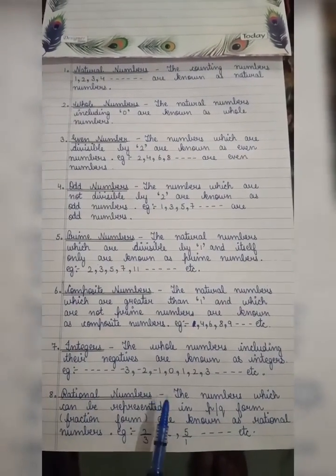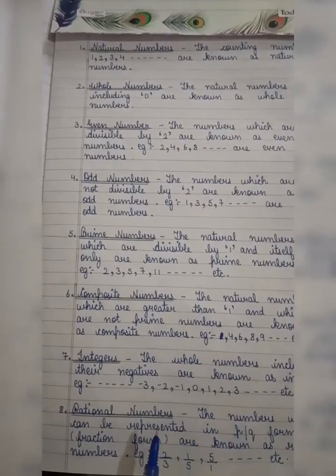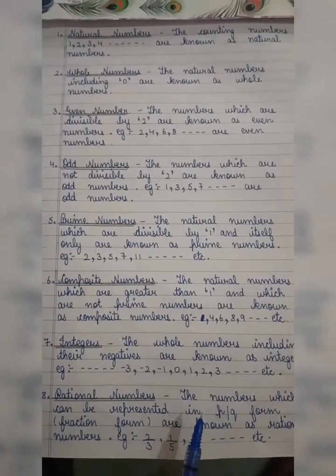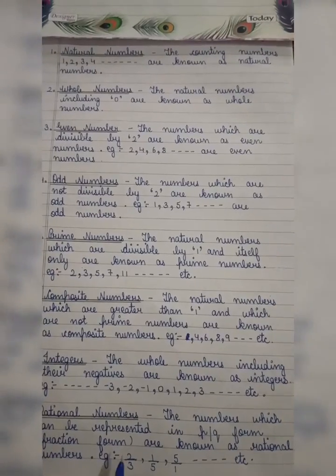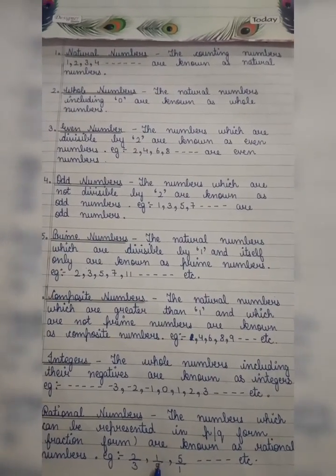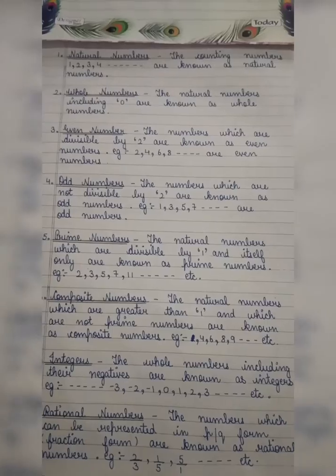Rational numbers - the numbers which can be represented in p upon q form are known as rational numbers. For example: 2/3, 1/5, 5/1.